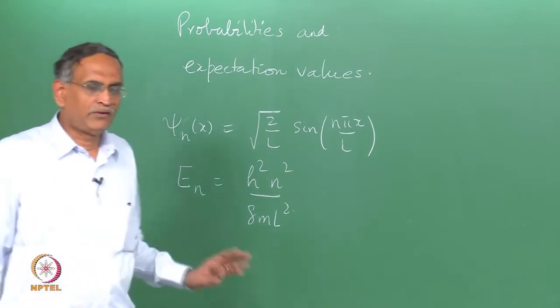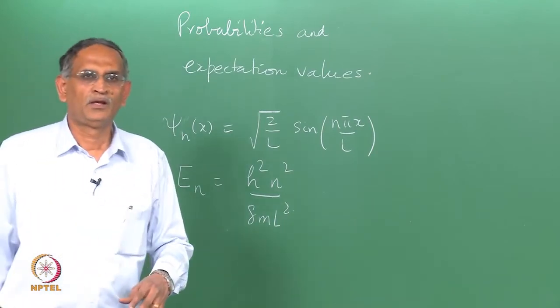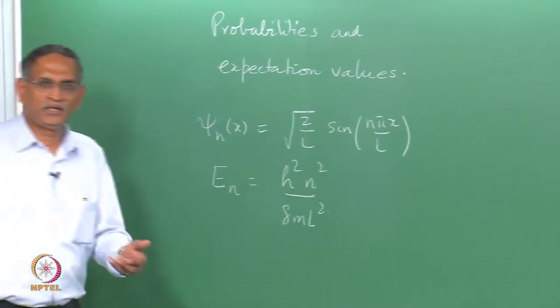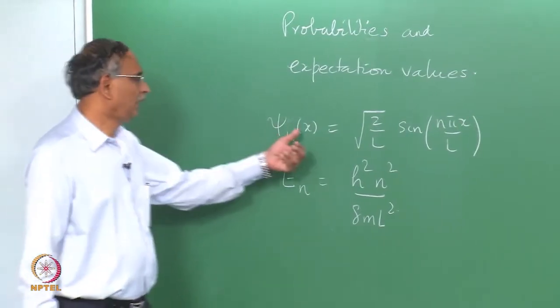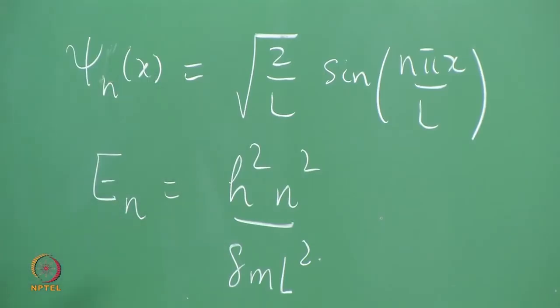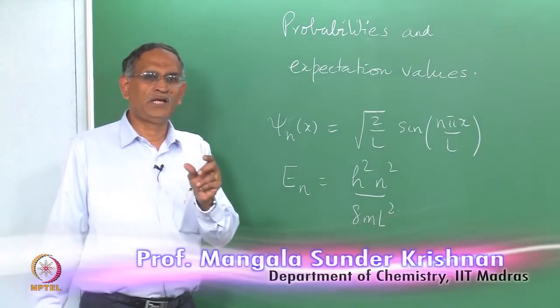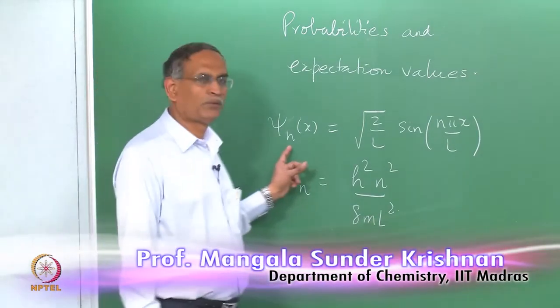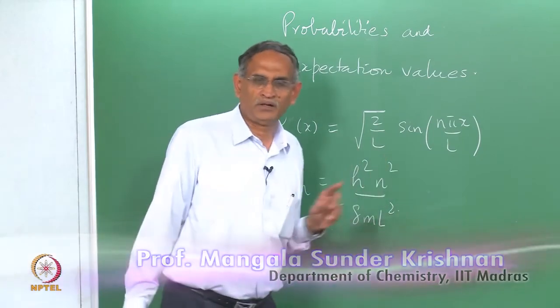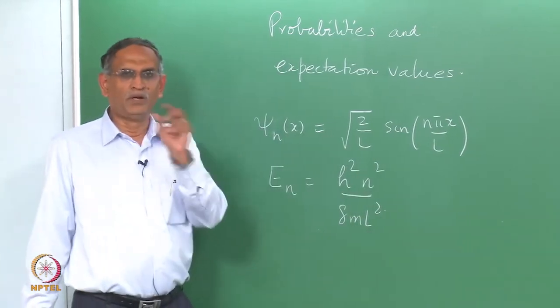Since ψ*ψ is the probability density at any point x and ψ*ψ at the small interval dx around x gives you the probability that the particle is in that small region.